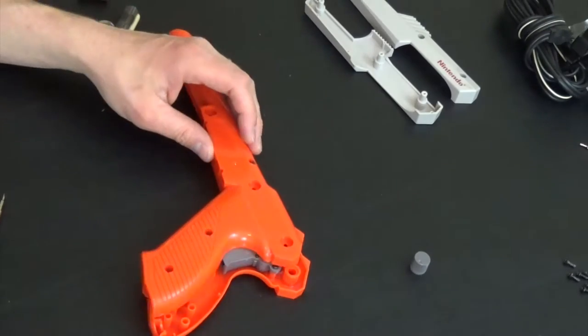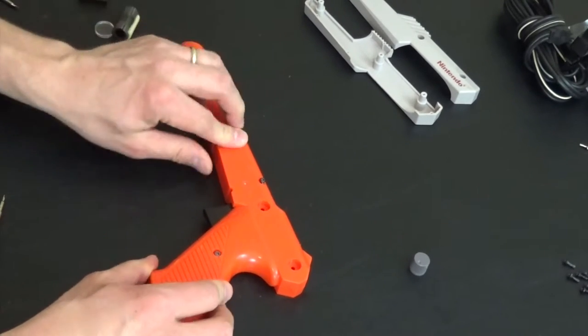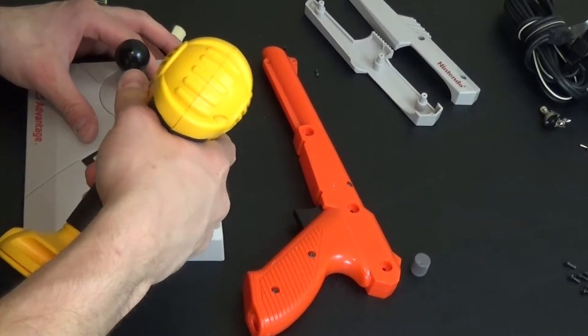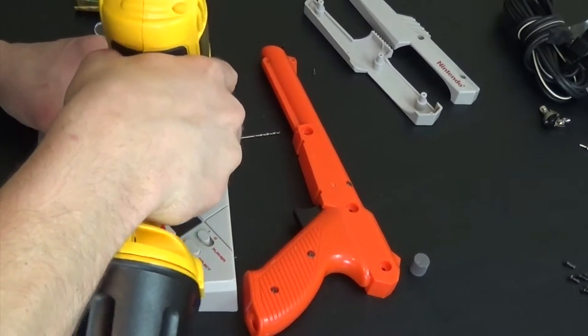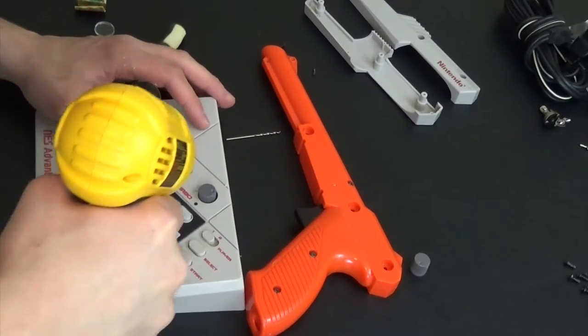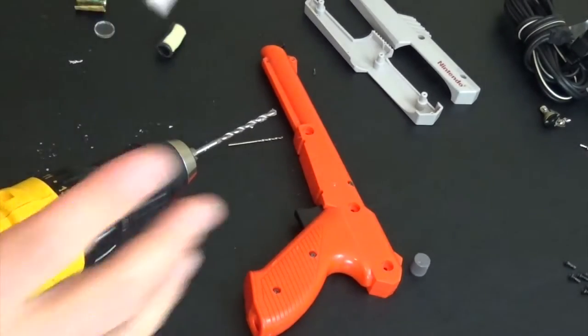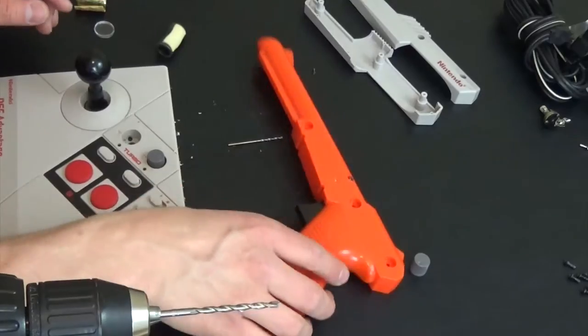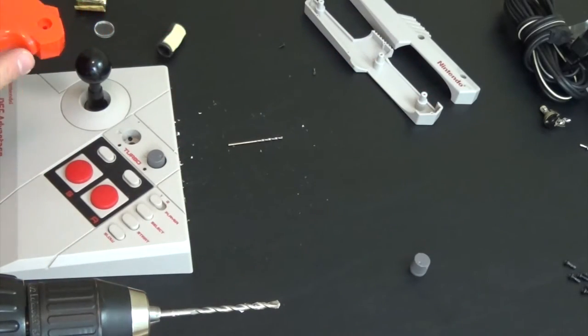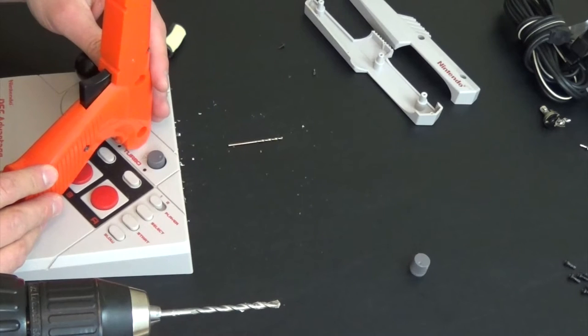Next put back on the gray housing and proceed to screw in all the screws. Here you see me putting back together the zapper just so I can line it up to make sure the lamp is going to look the way I want it. That looks about right.